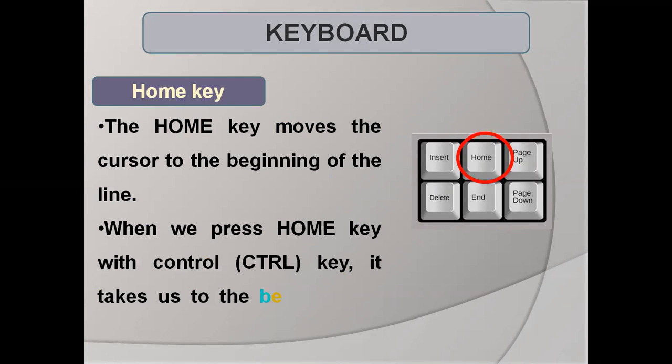When we press home key along with the control key, which is a special key that we have studied about in our previous class, it moves the cursor to the beginning of the document. If we press only home key, the cursor shifts to the beginning of the line, whereas when pressed along with control key, it moves the cursor to the beginning of the document.